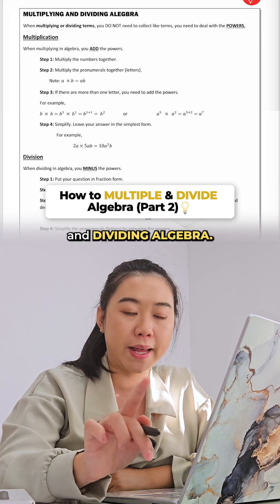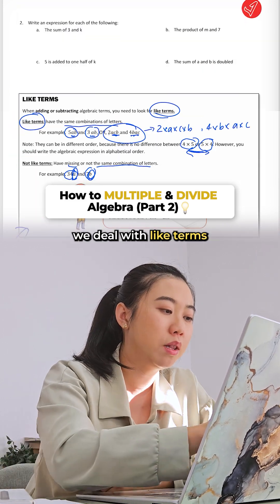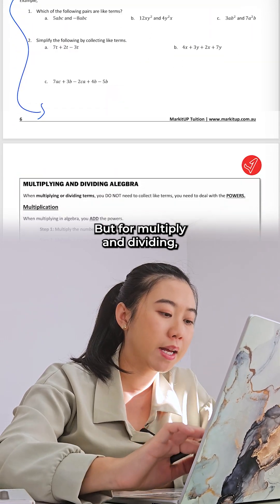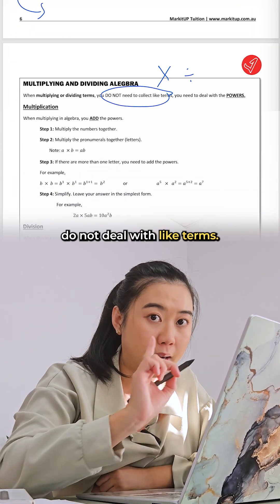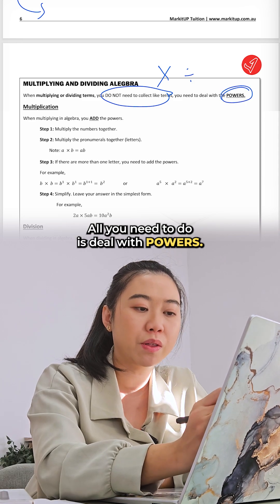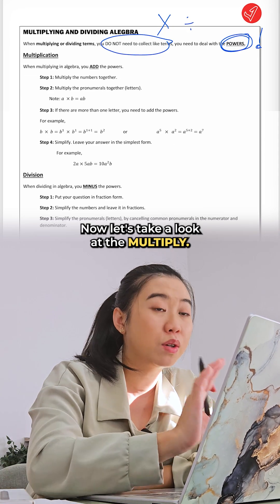The next topic is about multiplying and dividing algebra. Remember, we deal with like terms when it comes to adding and subtracting, but for multiplying and dividing, you do not deal with like terms. You don't care if the letters are the same or not. All you need to do is deal with powers.